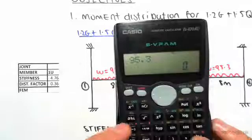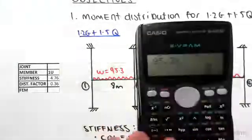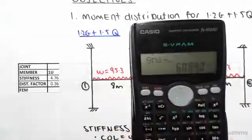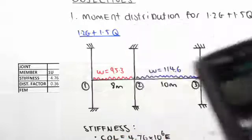So 95.3 times L squared is 8 squared divided by 12 gives us 508.2. So just rounding that we're going to get 508, and we have to put negative.